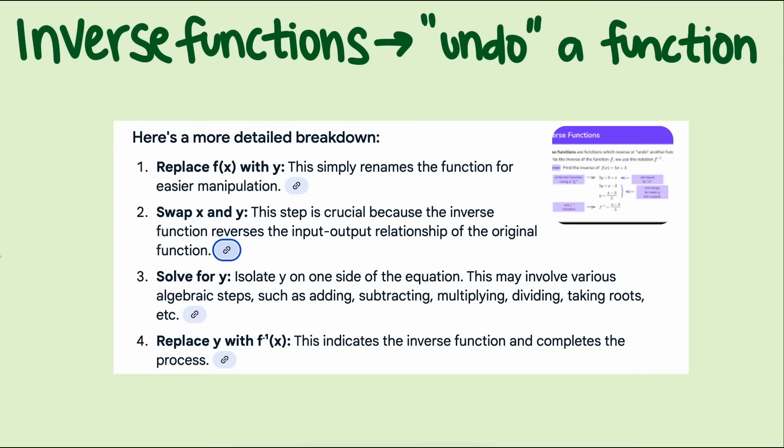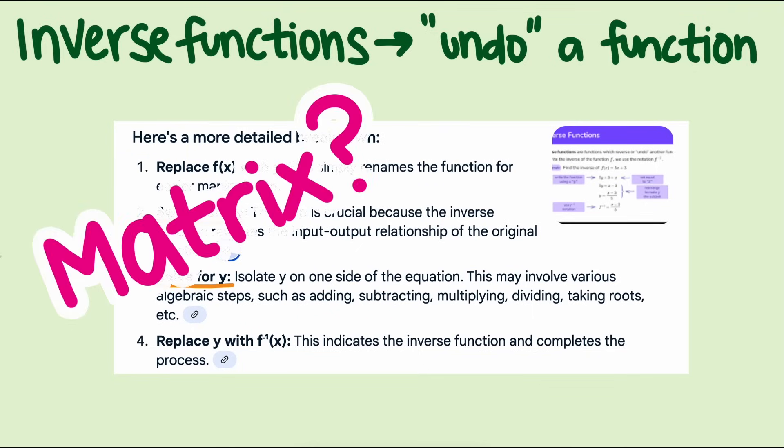Sadly, school problems rarely use real contexts, so swapping X and Y makes it seem like inputs and outputs are the same, even when they have different units and meanings in real life. So how does this apply to matrices and vectors?